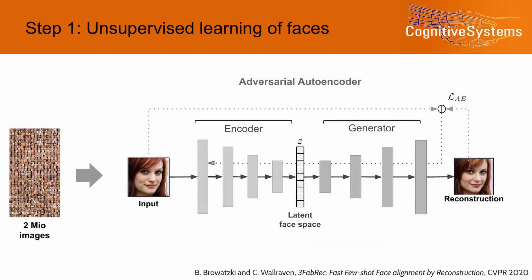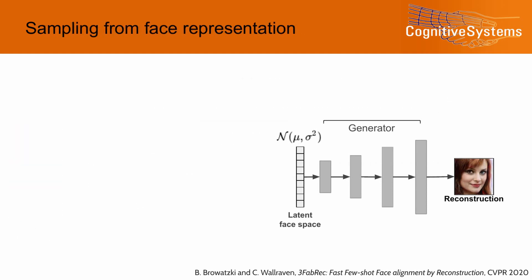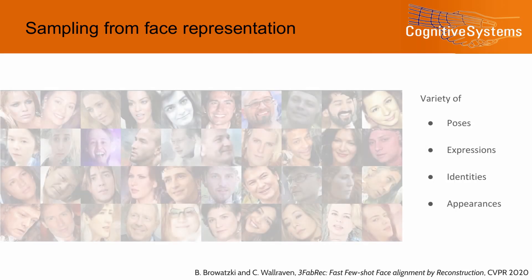We first generate implicit face knowledge from about two million images of faces. In this completely unsupervised stage, we train an adversarial autoencoder to encode faces into a low-dimensional face space and reconstruct the original images. By drawing random samples from this face space and feeding these random vectors through our decoding pipeline, we can visualize the face knowledge that is encoded in our model.